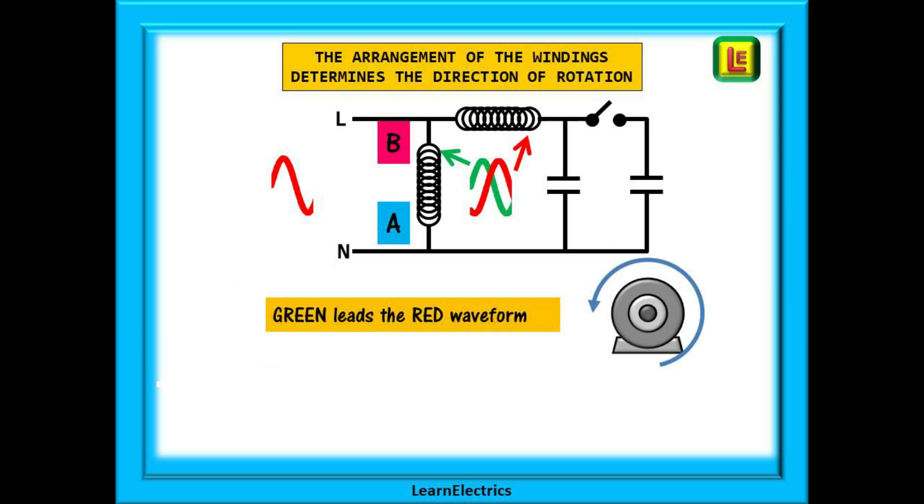To cause the motor to spin in the opposite direction we must rearrange the order in which the two windings are connected together. Notice that the positions of the A and B boxes have changed from the last slide.